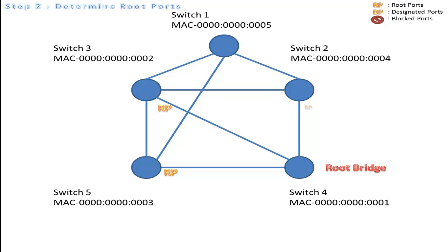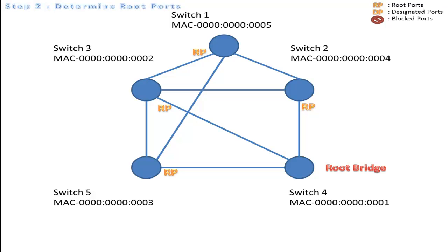Since switch 1 is not directly connected to the root bridge, we determine the root port for switch 1 by choosing the network which is connected to a switch with the lowest cost. In this scenario, the MAC address of switch 3 is the lowest compared to switch 2 and switch 5, thus the following port is the root port for switch 1.